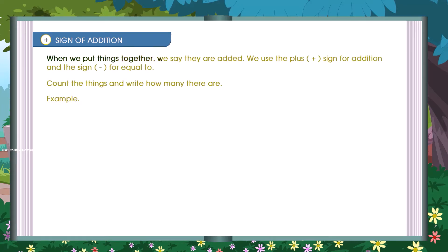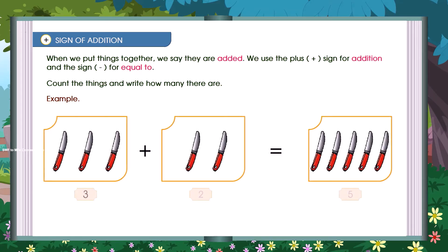Plus. Sign of addition. When we put things together, we say they are added. We use the plus sign for addition and the sign minus for equal to. Count the things and write how many there are. Example. 3 plus 2 is equal to 5.